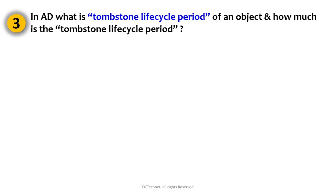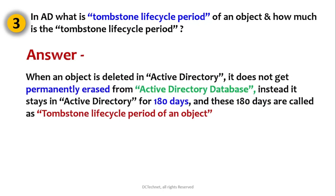Question number three: In Active Directory, what is the tombstone lifecycle period of an object, and how long is it? This question is asked 100% of the time. The answer is: when an object is deleted in Active Directory, it does not get permanently erased from the database. Instead, it stays in Active Directory for 180 days, and those 180 days are called the tombstone lifecycle period of an object.